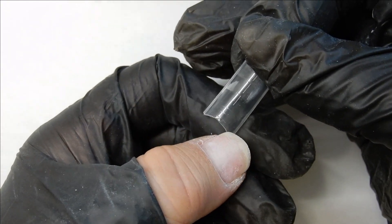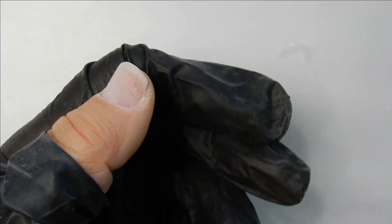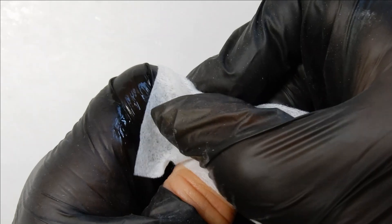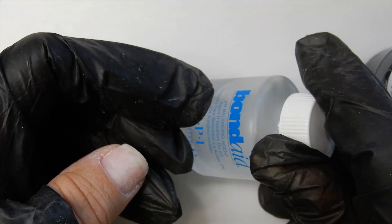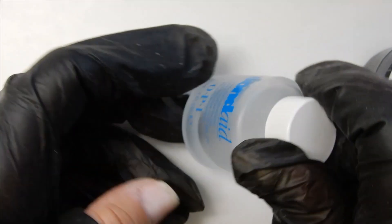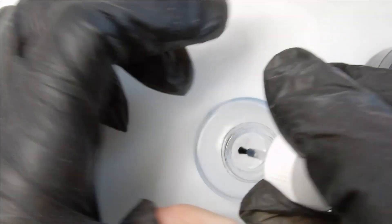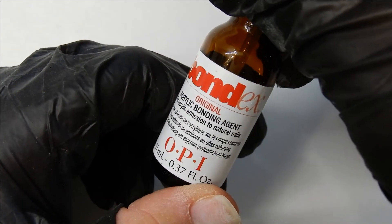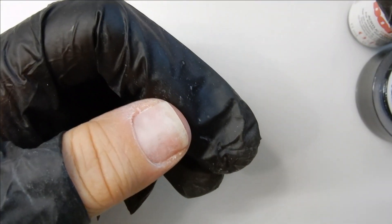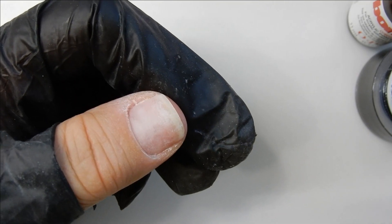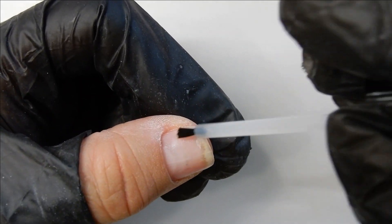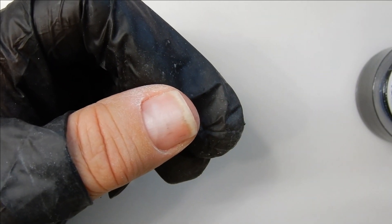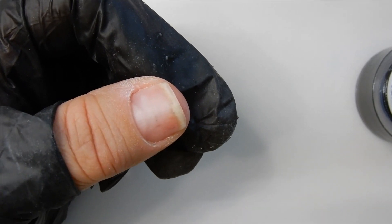Now that I've got my nail all prepped - just cleaned it with isopropyl alcohol - I'm going to add a dehydrator. This is Bond Aid by OPI, it's what I always use. Then for a primer I'm using Bond X by OPI. It is for acrylic but it also works for gel, at least I find that it does. Then let that dry, which takes maybe 30 seconds to a minute.